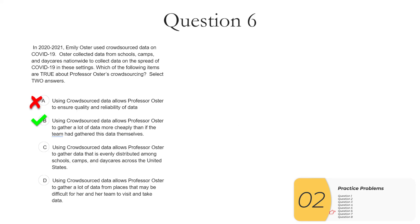C, using crowdsourced data allows Professor Oster to gather data that is evenly distributed. This is definitely not true. As much as you'd like evenly distributed data, citizen science is not going to give you that. You're going to get what you get and don't complain. That's how citizen science data works. So C is not true.